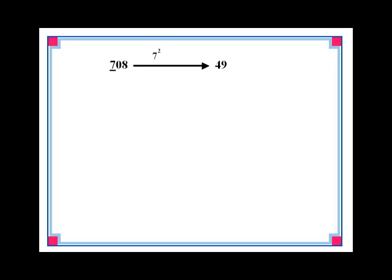Now you might wonder what happens if a step contributes more than two digits. Let's solve a final example that takes care of such a situation. Let's find the square of the number 708. Once again we first square 7 which is the leftmost digit and get 49 as shown.